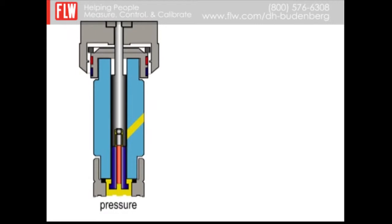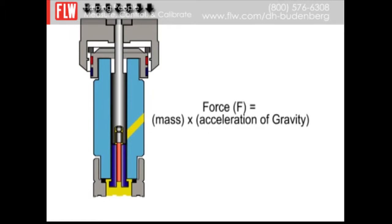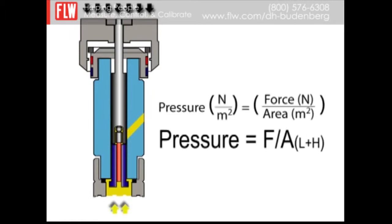As pressure is applied to the fluid under the piston, an equilibrium is reached between the downward force of the masses loaded and the upward force of the fluid. At this point, the pressure equals the force divided by the cross-sectional areas of the low pressure piston and the high pressure piston.